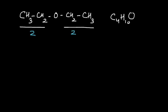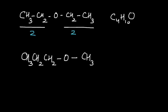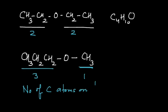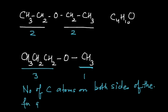If I draw an isomer of this ether by keeping three carbon atoms on one side, then the functional group, and then the final carbon atom — when we count, we have three carbon atoms on the left side and only one carbon atom on the right. The number of carbon atoms on both sides of the functional group are different in the two compounds, and that is what we call metamerism.